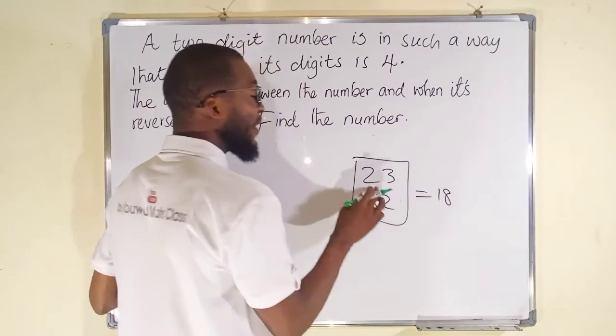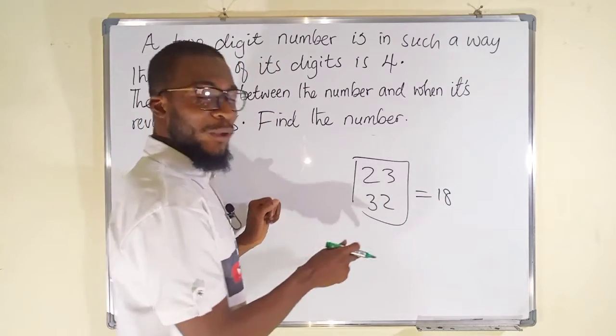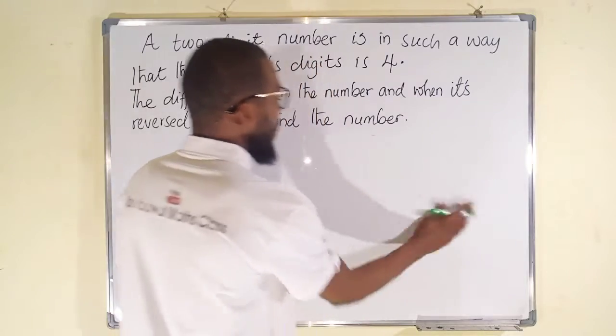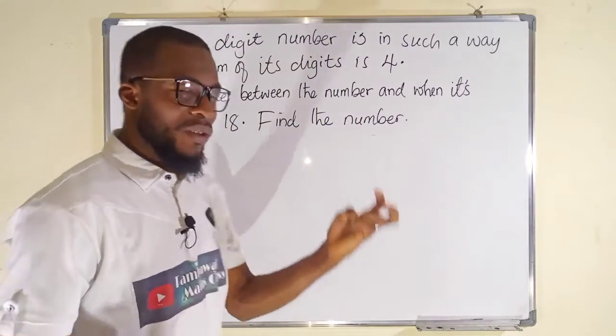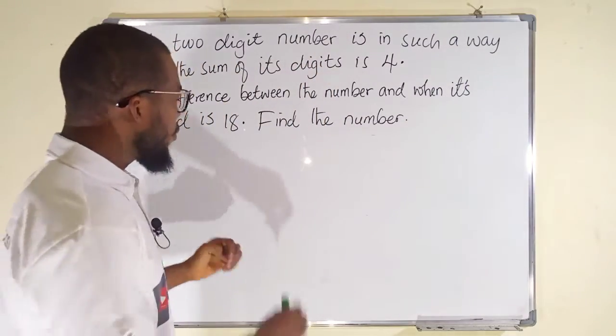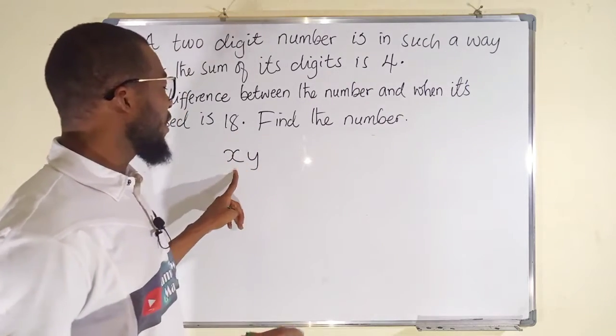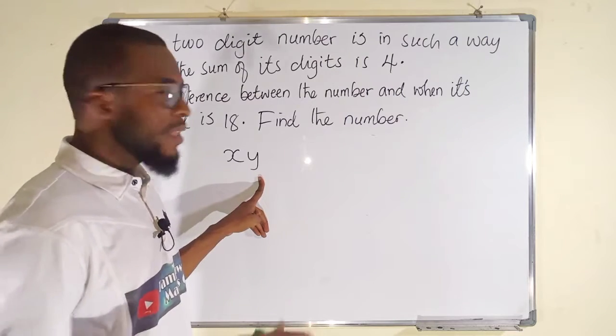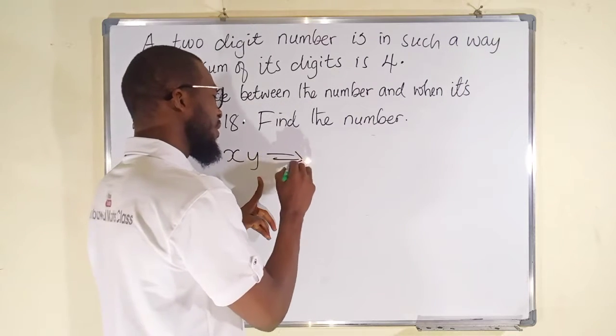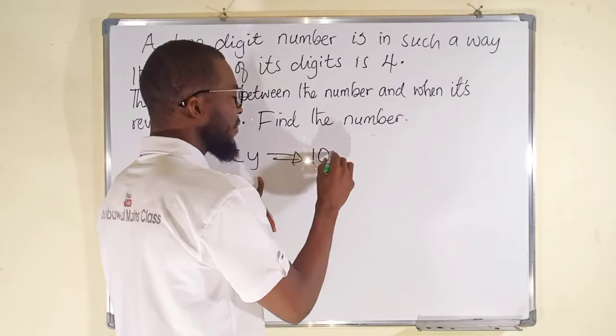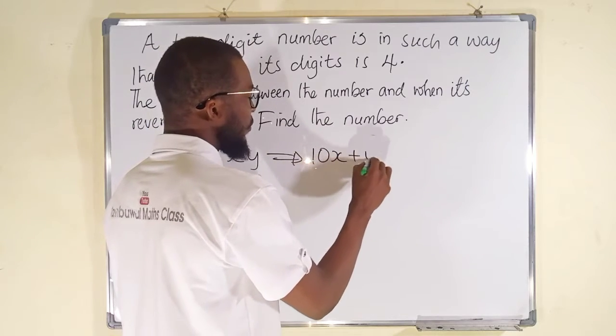Alright, so let the first and the second digit be X and Y. But I don't want to write it as XY, because in mathematics this is X multiplied by Y. Instead, I can write it as 10X plus Y. I will explain this.